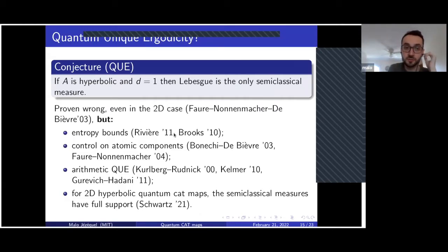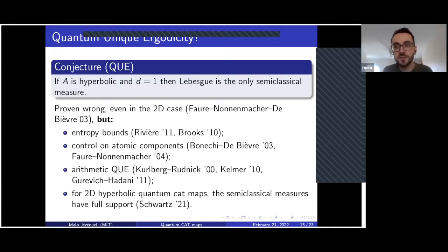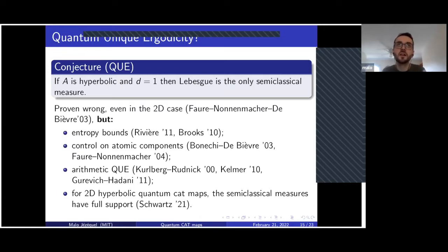There is a result by Rivière and Brooks giving entropy bounds: the Kolmogorov entropy of any semi-classical measure must be positive — there is an implicit lower bound. In particular, semi-classical measures supported on periodic orbits are not possible. There is also a result by Faure-Nonnenmacher-De Bièvre saying you cannot have too many atomic components — the atomic component cannot carry more than half the mass. Then there is arithmetic quantum unique ergodicity: the quantum cat map has eigenspaces of very high dimension — very high multiplicity — which creates a lot of choices when constructing semi-classical measures.